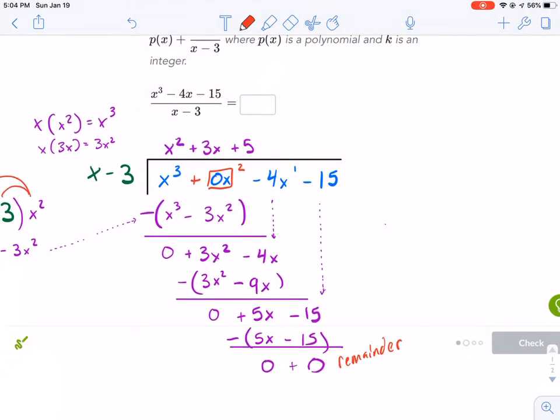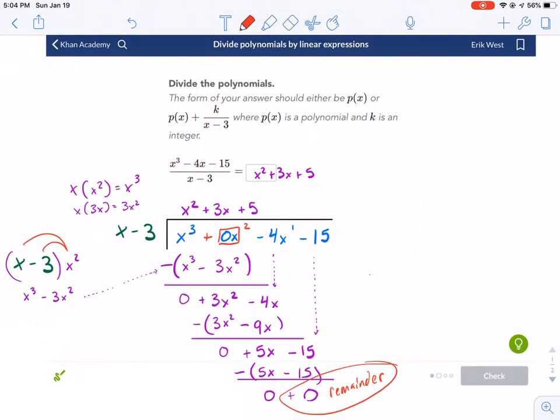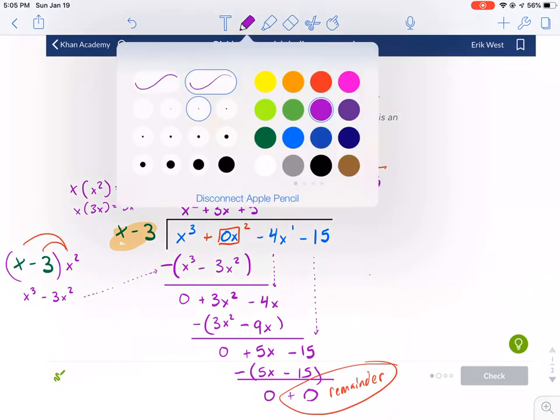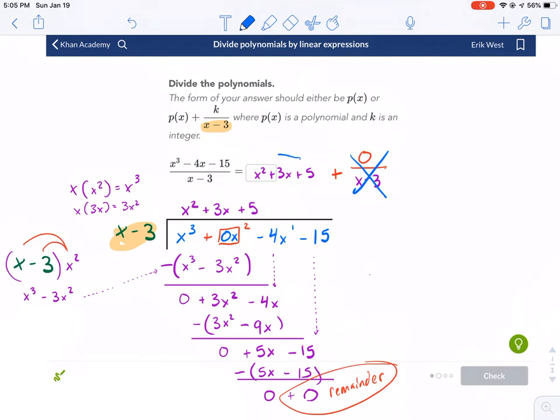So what we're going to do is write our answer as x² plus 3x plus 5. And if you do get a remainder, this is how you express it, especially with this particular Khan Academy - you're going to do plus whatever your remainder is (in this case zero) over whatever you're dividing by. That's why it has this x minus 3 already in there for your template. But since zero divided by x minus 3 is just zero, we don't need to include this in our answer. So we're just going to write x² plus 3x plus 5 into our answer.